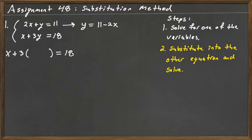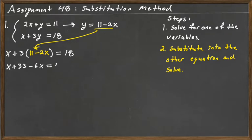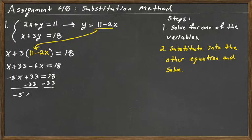So x plus 3 times the quantity 11 minus 2x equals 18. Now it's an equation of one variable, and we'll solve that. Distribute: x plus 33 minus 6x is equal to 18. Combine like terms: negative 5x plus 33 is equal to 18. Subtract 33 from both sides: negative 5x is equal to negative 15. Divide by negative 5 on both sides, and x is equal to 3. Now we need to solve for both x and y — we found x, we still need to find y.